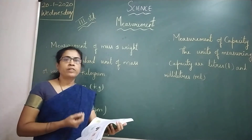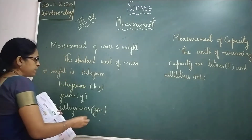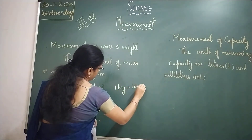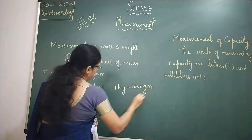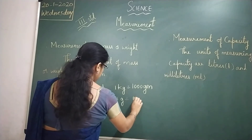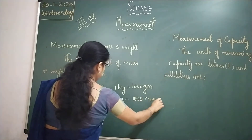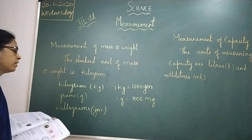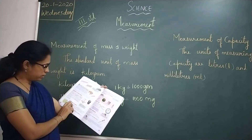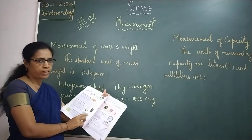Using those weights, they measure the weight of items. Children, remember: 1 kilogram is equal to 1000 grams, and 1 gram is equal to 1000 milligrams. So that is the beam balance and the electronic balance.